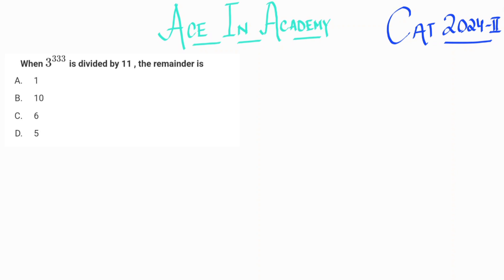Now the question is as follows: when 3 raised power 333 is divided by 11, the remainder is, and we are provided four options for this question: option A 1, option B 10, option C 6 and option D 5.